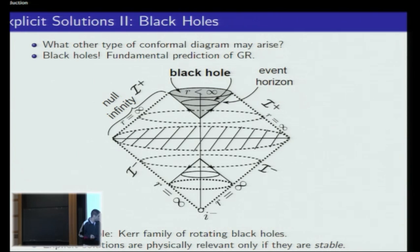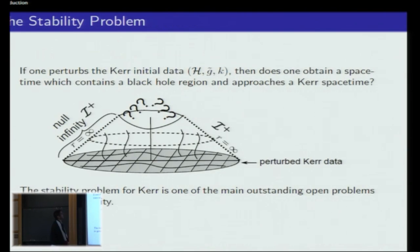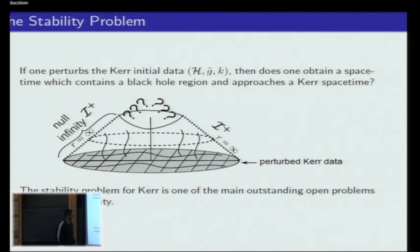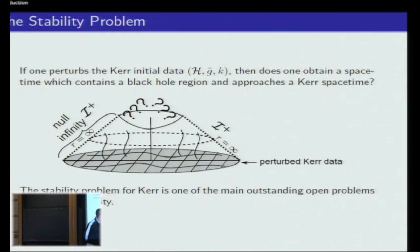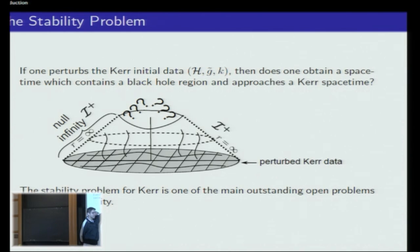The Kerr family has two parameters: the angular momentum parameter a and the mass parameter. The stability problem is: you consider the initial data for a black hole, you perturb the metric and the second fundamental form slightly, then you solve the Einstein equations for the perturbed data and ask whether the resulting spacetime is close to the original one.